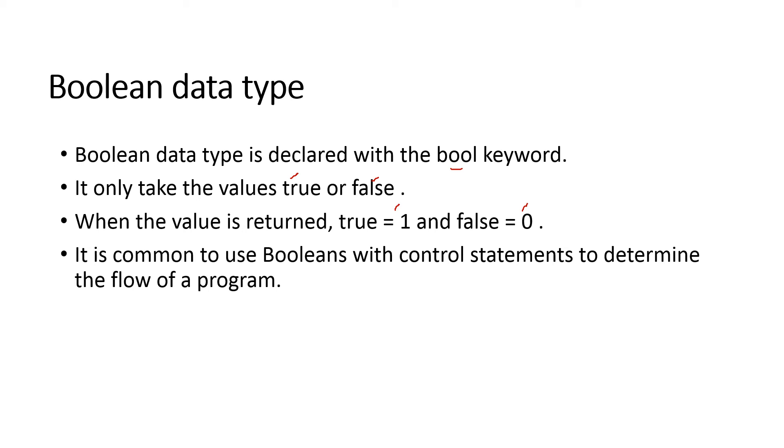It is common to use booleans with control statements to determine the flow of a program. It shows the flow. That is, if it is true, it will go in this way. If it is false, it has to go in some other way.